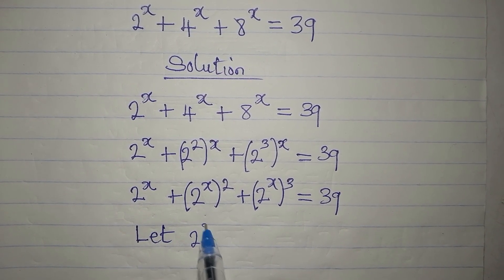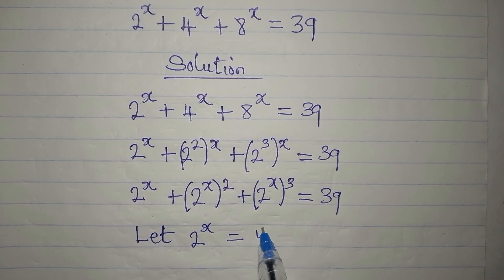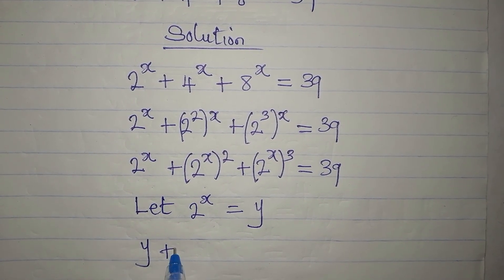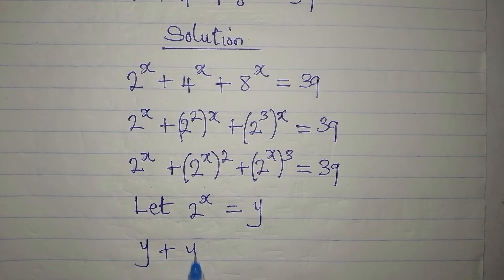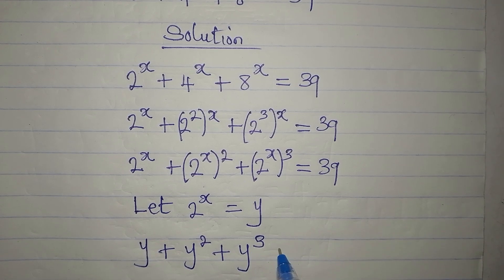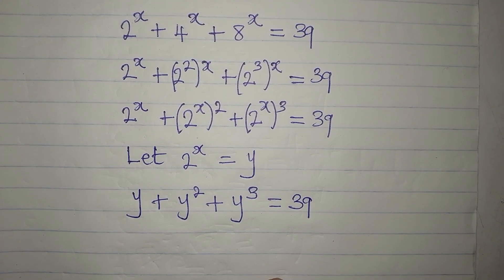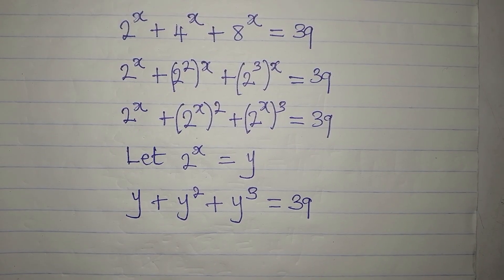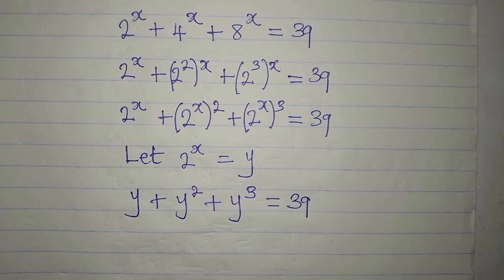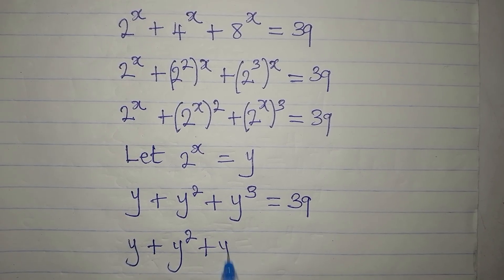Let 2 to the power of x be equal to y. So now we have y plus y to the power of 2 plus y to the power of 3, equal to 39.